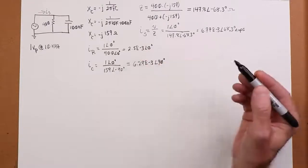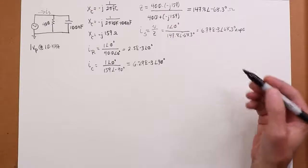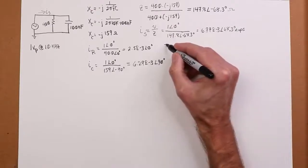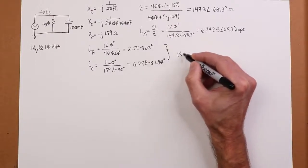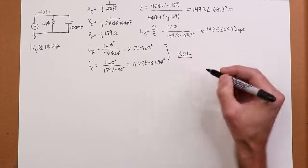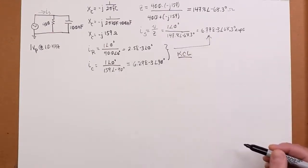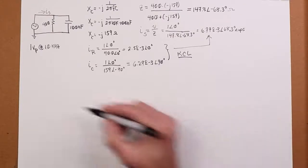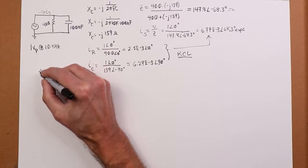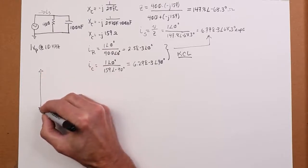Now, if we take these two and we add them together, so here's our KCL. We take these two things and we add them together, we should get the source current.